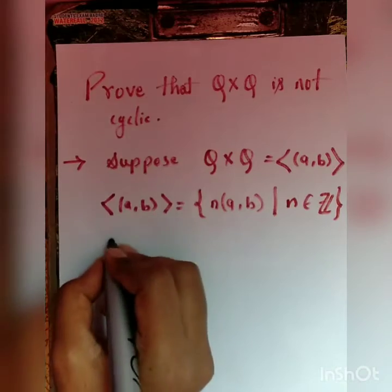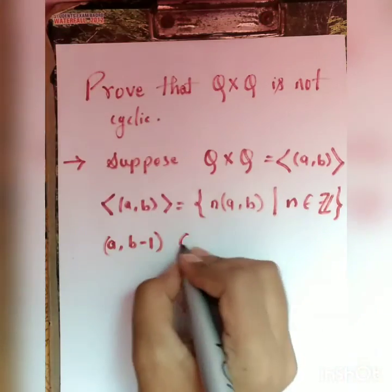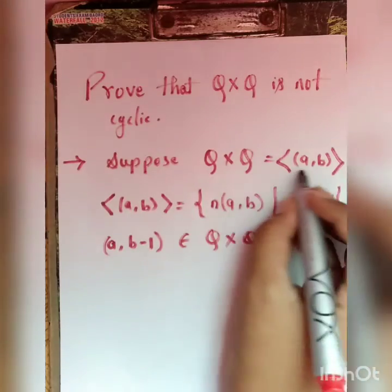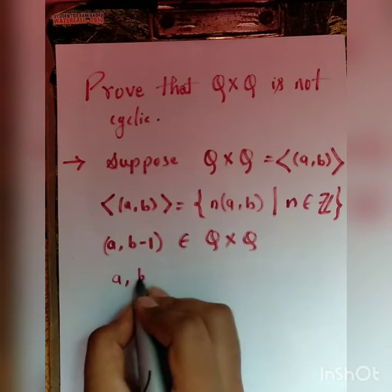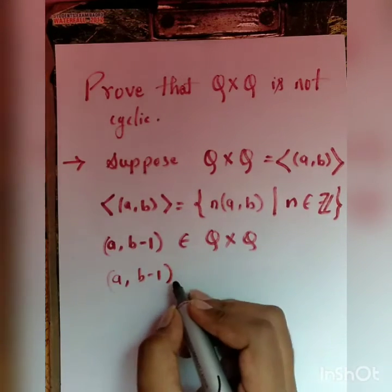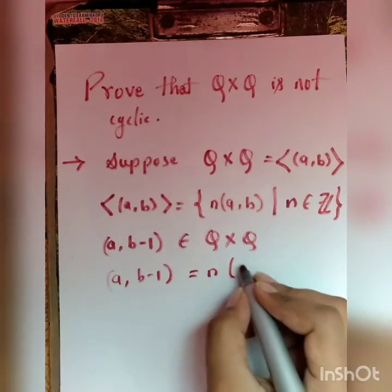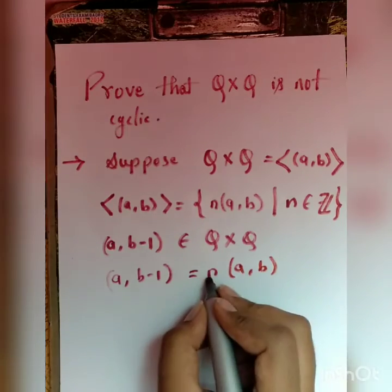Now (a, b-1) belongs to Q × Q, and if Q × Q were generated by (a, b), we get (a, b-1) is equal to n times (a, b), where n is some integer.